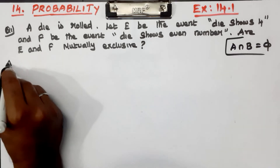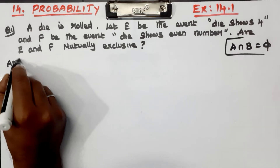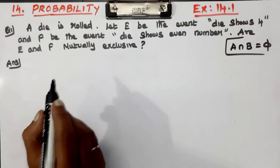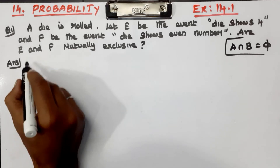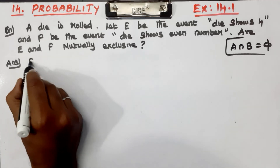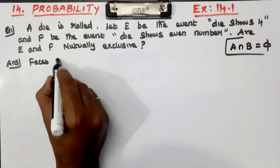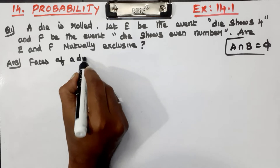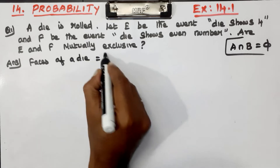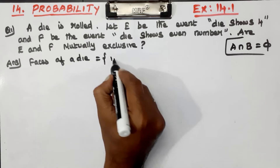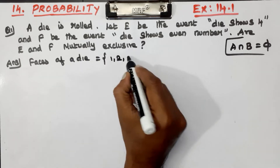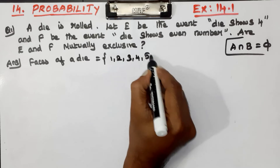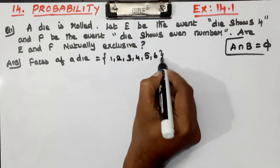The first question is about the faces of your die. What are the faces of your die? We know: 1, 2, 3, 4, 5, 6.